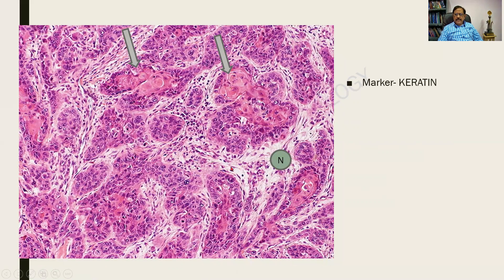Again, I find multiple nests of these tumor cells, and the arrows are pointing to the epithelial pearls. Epithelial pearls are a concentric arrangement of tumor cells which are more eosinophilic at the nidus. These are the various nests of the tumor cells, and the tumor can be seen infiltrating the fibrocollagenous stroma.